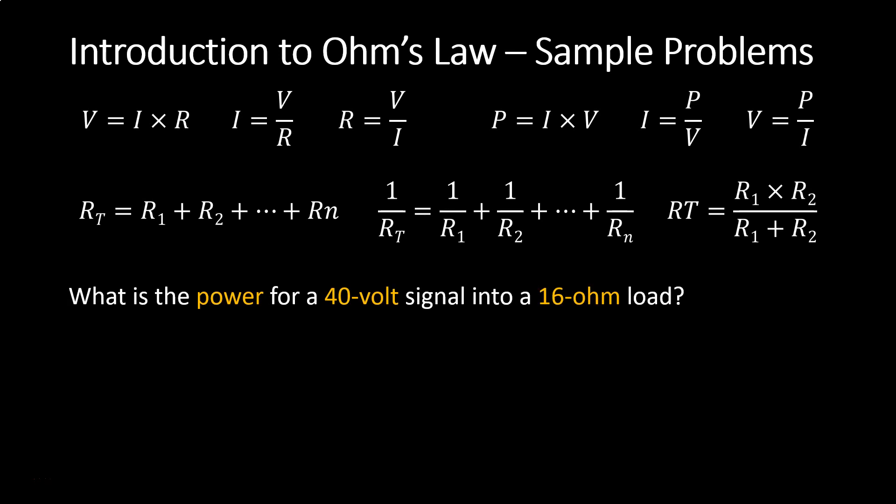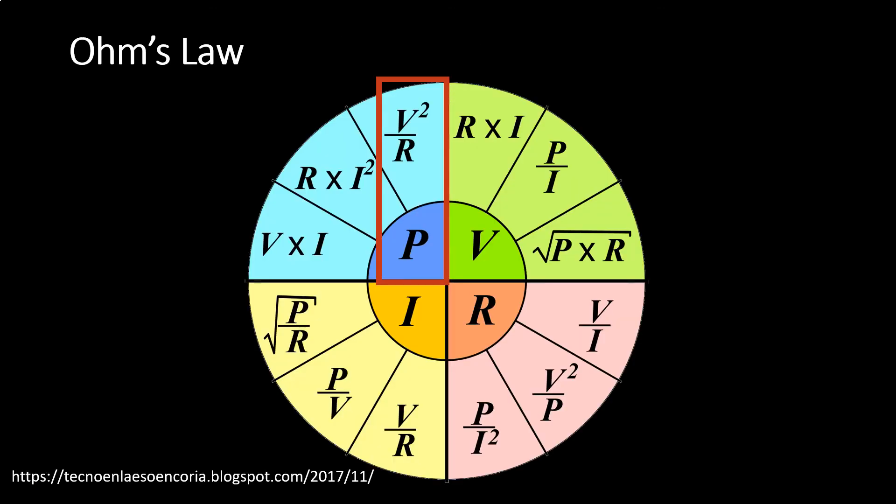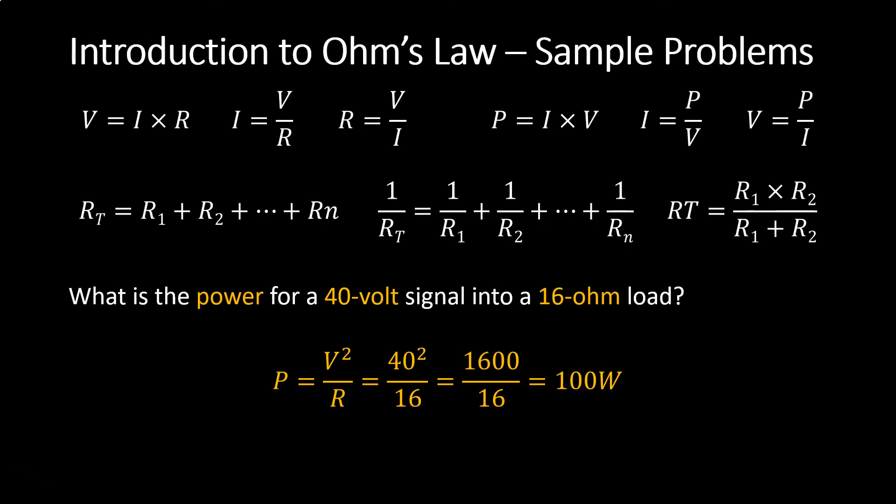The next problem: what is the power for a 40 volt signal into a 16 ohm load? There's no direct combined equation on this page for power from voltage and resistance, so the easiest approach is to use the circle. Solving for P, knowing voltage and resistance, the equation is in the upper left quadrant: V squared over R equals P. Plugging in the numbers, a 40 volt signal into a 16 ohm load gives 100 watts.